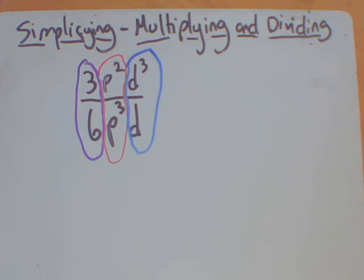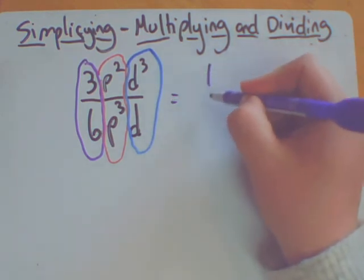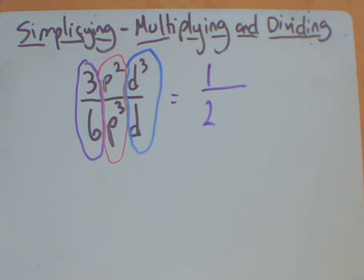So 3 divided by 6, that actually gives me a half. Now I'm not going to write it as 0.5, I'm going to write that as a half. p squared divided by p cubed. So if I take the two p's off the top and I have my three p's on the bottom and I cancel them out, you'll see I actually get left with a p on the denominator of my fraction.